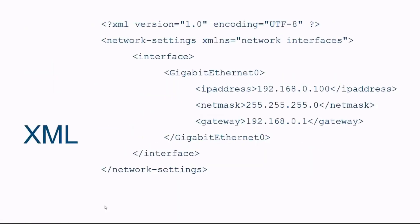Let's look at how the data is organized in XML. You have the data objects with the key IP address and the value pair 192.168.0.100. So this is a key-value data object, along with the NetMask and the Gateway, all data objects with key-value pairs.